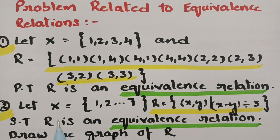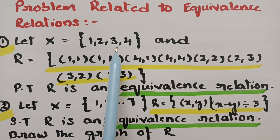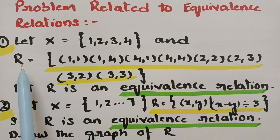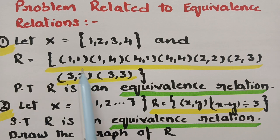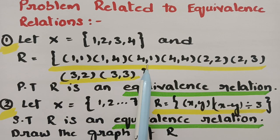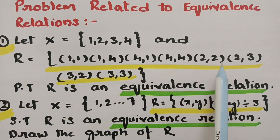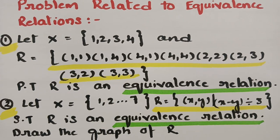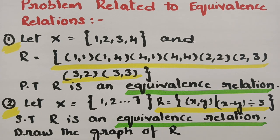The first problem is: let X = {1, 2, 3, 4} and the relation R is the set of ordered pairs {(1,1), (1,4), (4,1), (4,4), (2,2), (2,3), (3,2), (3,3)}. We have to prove that R is an equivalence relation.